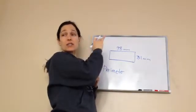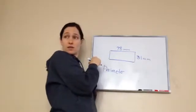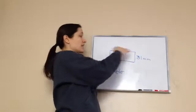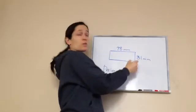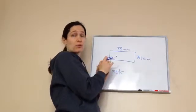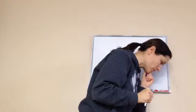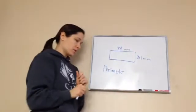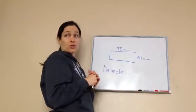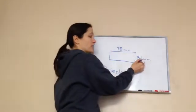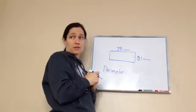Perimeter is the distance around something. So, it's kind of like a fence in your yard. This would be our fence. We want to know how much fencing do we have to buy. Okay. So, you're going this plus this plus this plus this. That's what perimeter is. Now, they want us to round the length and the width to the nearest 10 millimeters. Okay. So, they're wanting you to round it to the nearest 10's place. 10's place.